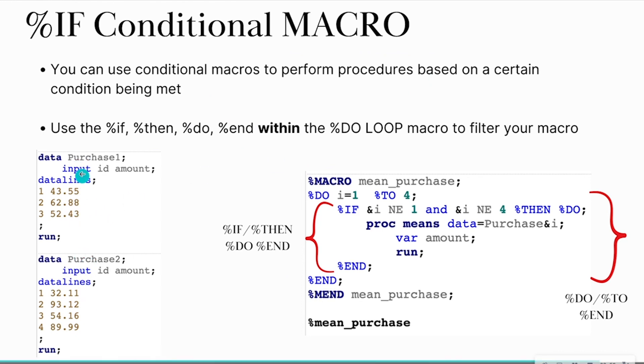So in the last video, we've made several data sets that had purchase information. So I had data called purchase one for purchases made in month one, purchase two for purchases made in month two, purchase three for purchases made in month three, and so forth. And then I created this macro program. And keep in mind that my macro program starts with my percent macro statement and ends with my percent mend statement. And inside of this program, I could do anything.